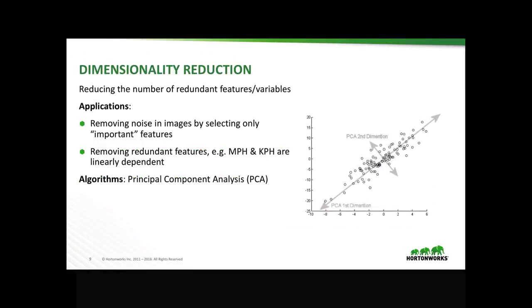Finally, dimensionality reduction deals with reducing the number of redundant features or variables. Some of the applications are removing noise in images by selecting only the important features, or removing redundant features — for example, miles per hour and kilometers per hour, which are linearly dependent.